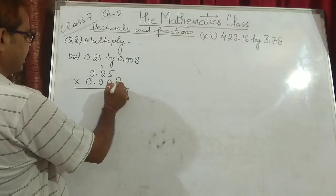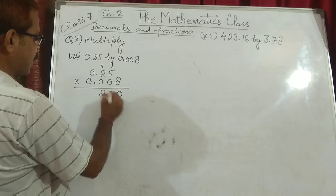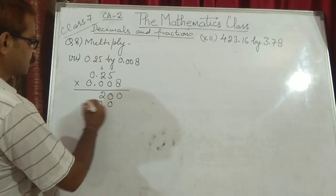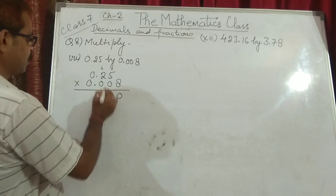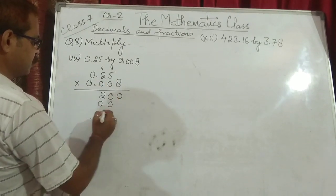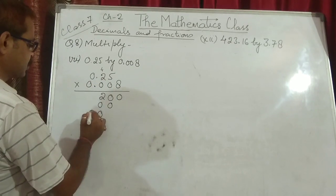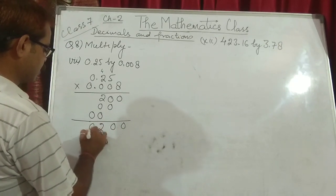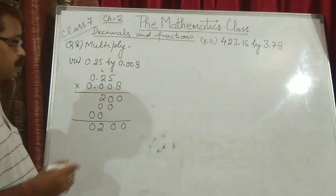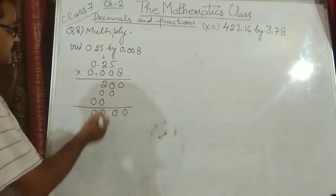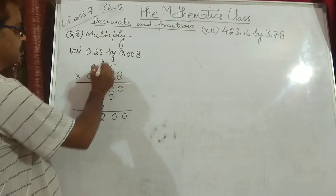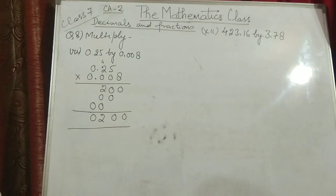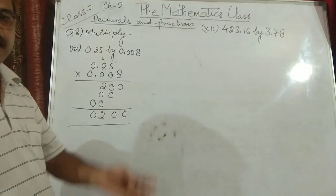Now: 8 times 5 is 40, carry 4. 8 times 2 is 16, plus 4 is 20. Then multiply by the 0 digit rows — those all give 0. Now we count the total number of decimal places: 0.25 has 2, and 0.008 has 3 — total 5 decimal places. So in the answer, the decimal will be placed 5 digits from the right towards the left.